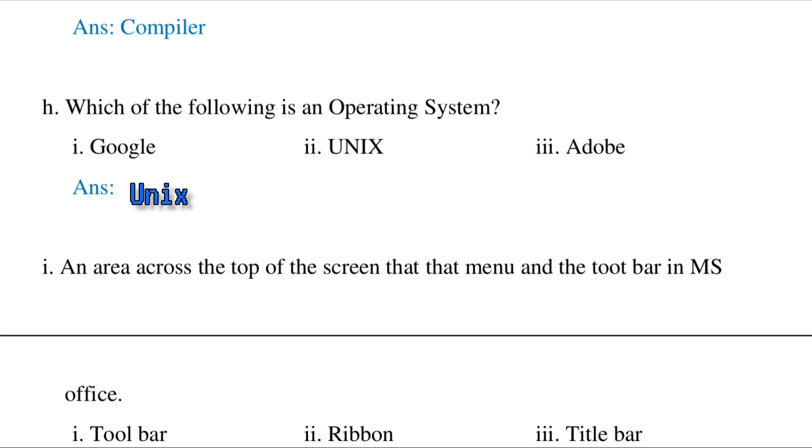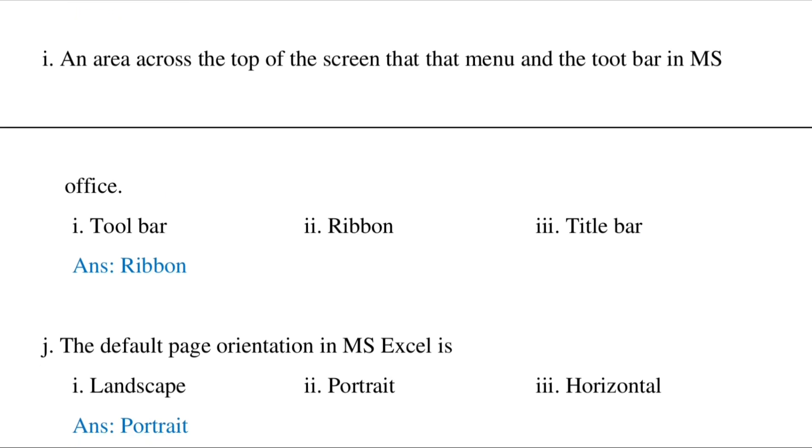An area across the top of the screen that contains menu and toolbars in MS Office - it is Ribbon. The default page orientation in MS Excel is Portrait. Portrait means normally how we hold our copy or book, and if we turn it 90 degrees, it's called Landscape.